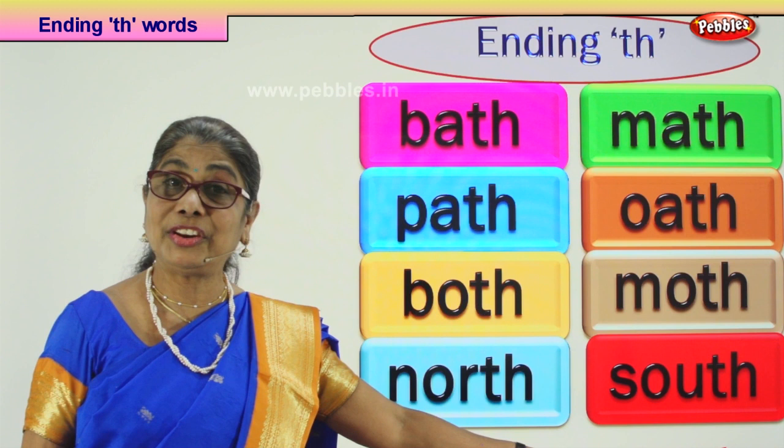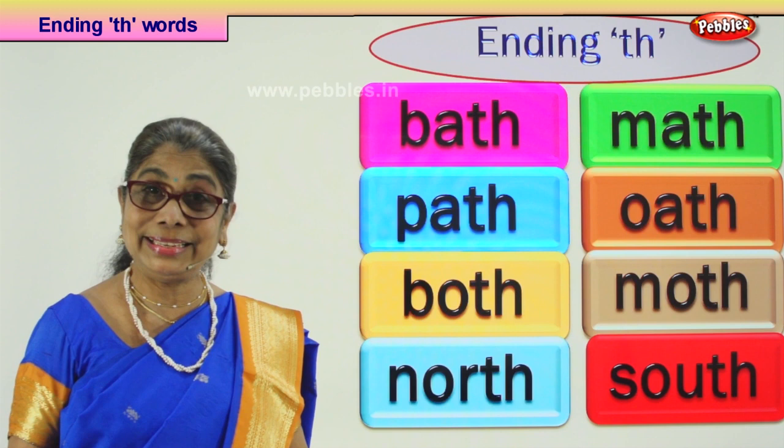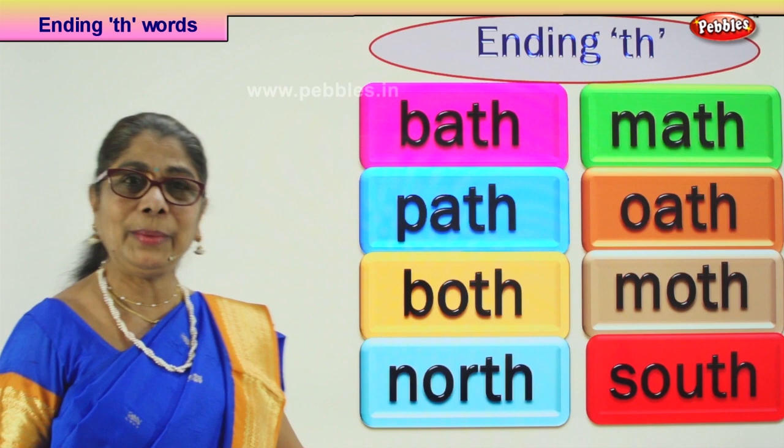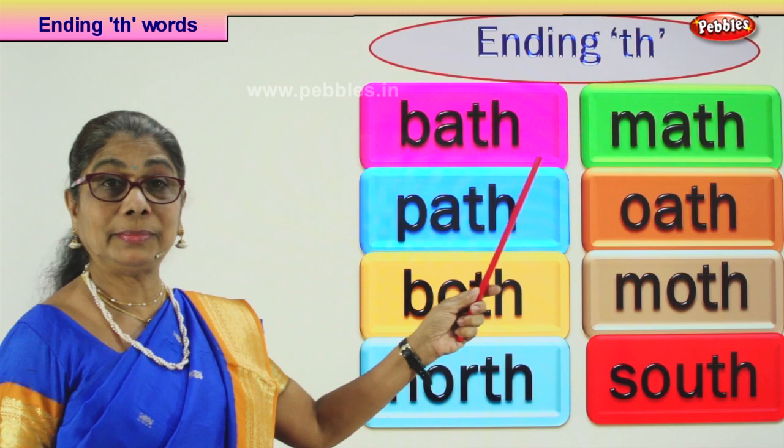What is this next word? Read for me — south. That's another direction. There are four directions: north, south, east, and west. Now let's read together. Ending consonant digraph 'th' words: bath, math, path, oath, both, moth, north, south.